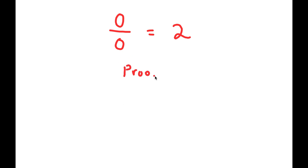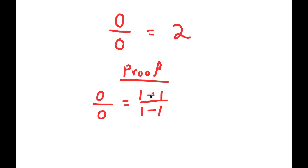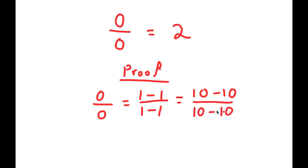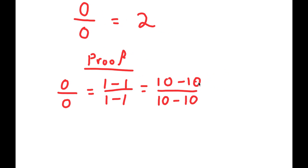So for my proof, I'm going to first start with 0 over 0. This is the same thing as (1 minus 1) over (1 minus 1), because 1 minus 1 is equal to 0, so (1 minus 1) over (1 minus 1) is still 0 over 0. And (1 minus 1) over (1 minus 1) is also the same thing as (10 minus 10) over (10 minus 10). These two are the same because they're both 0 over 0. And (10 minus 10) over (10 minus 10) is the same thing as (100 minus 100) over (100 minus 100).